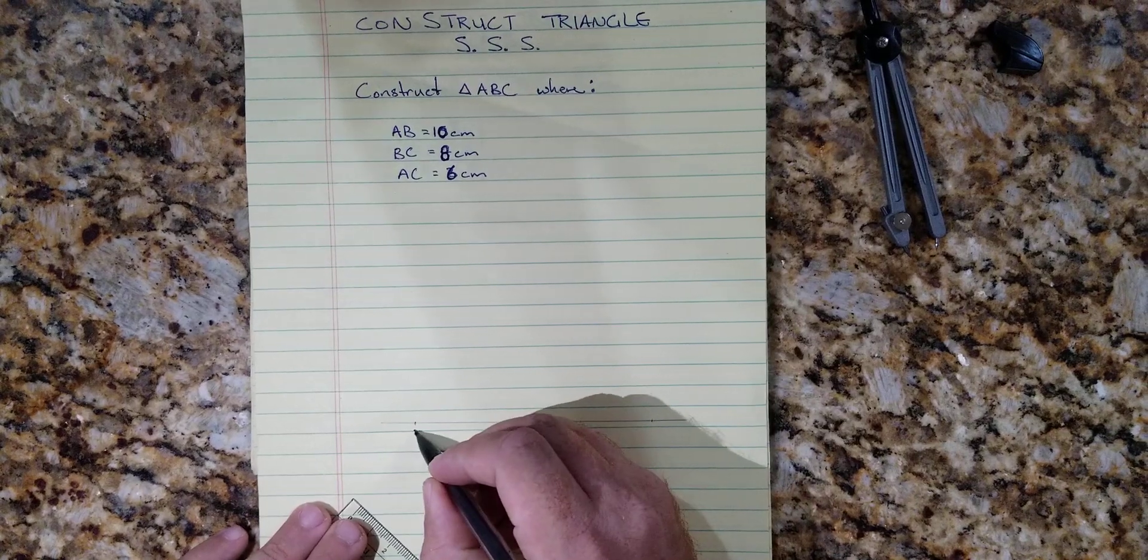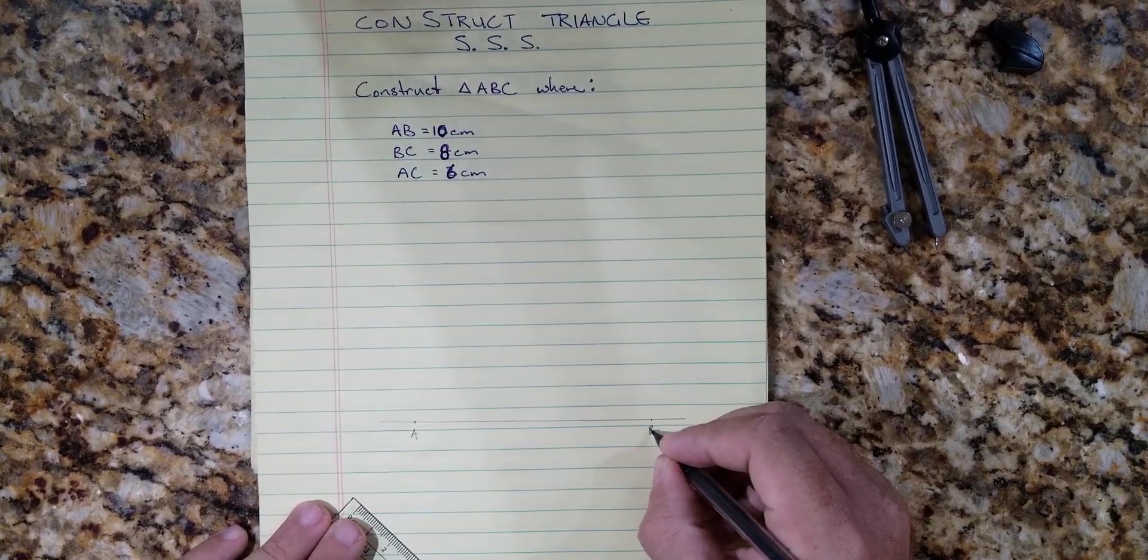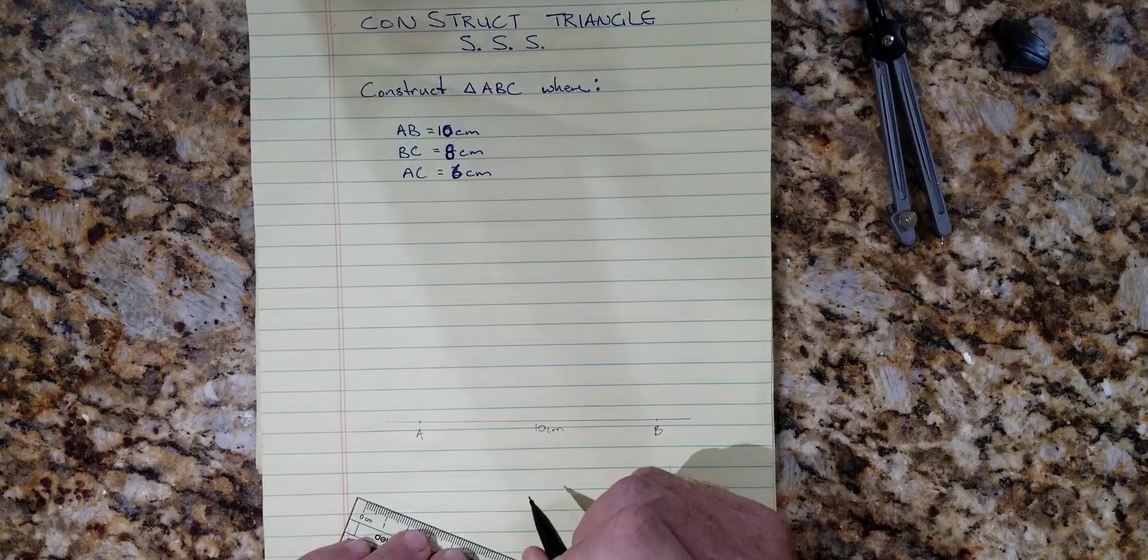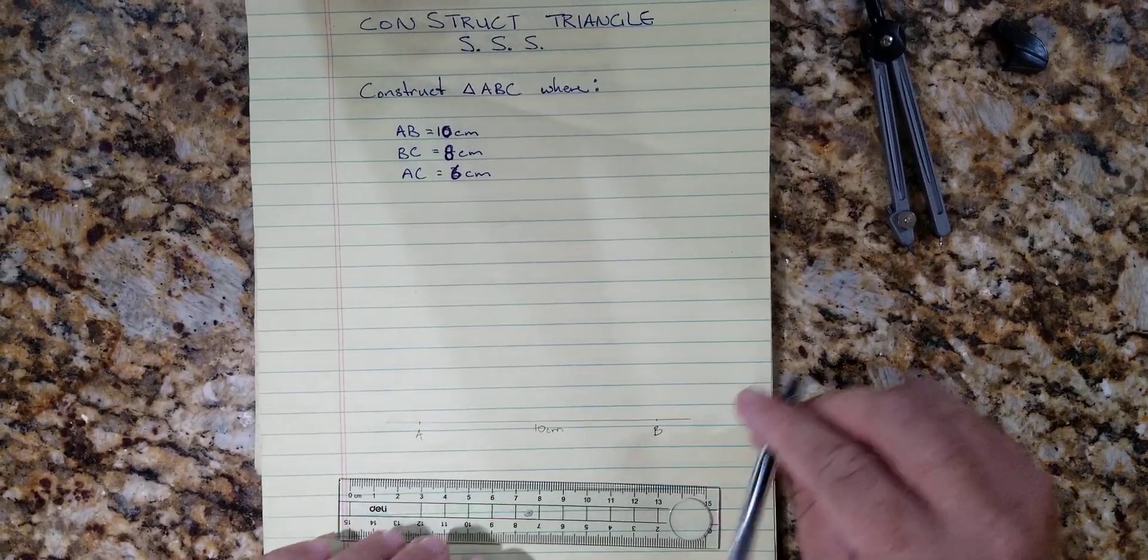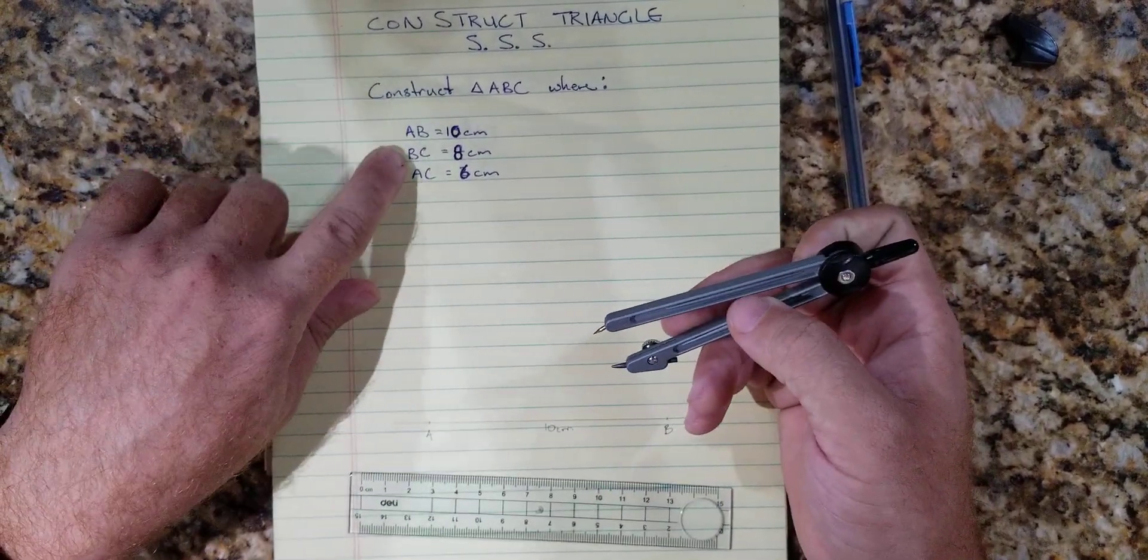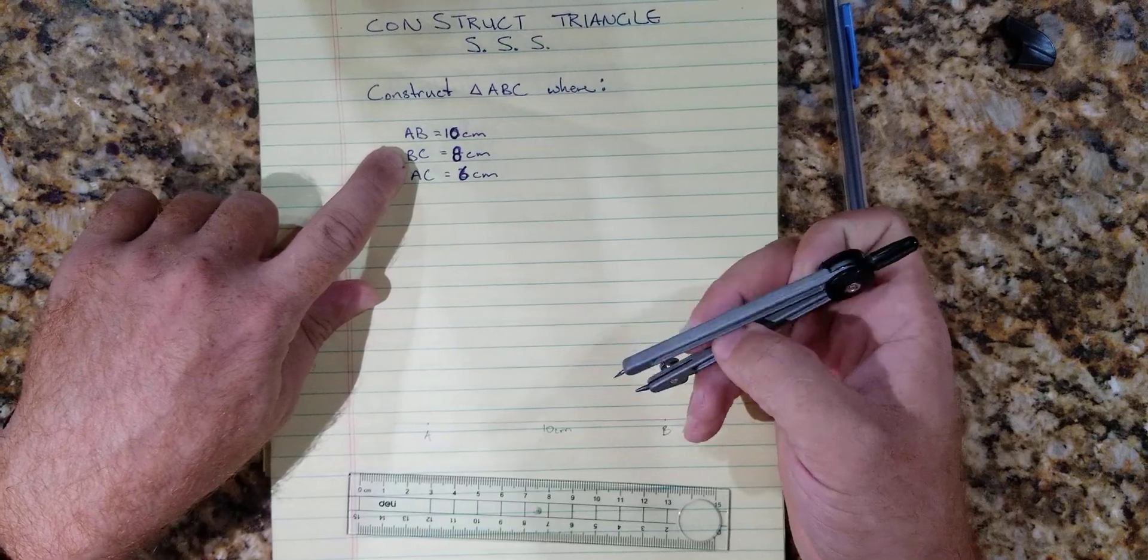So that's our line AB and it's 10 centimeters. Very important to label your work. All right, now we're going to use our compass. We're going to get line BC now, which is 8 centimeters.